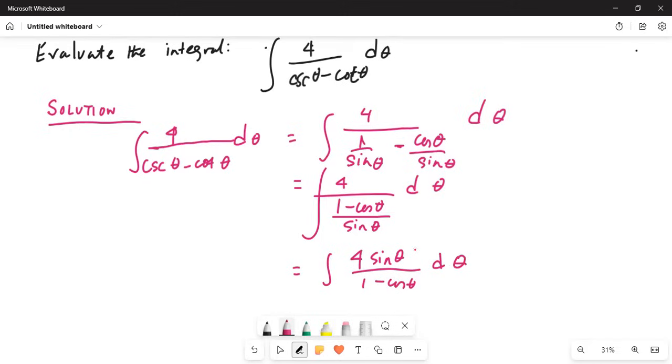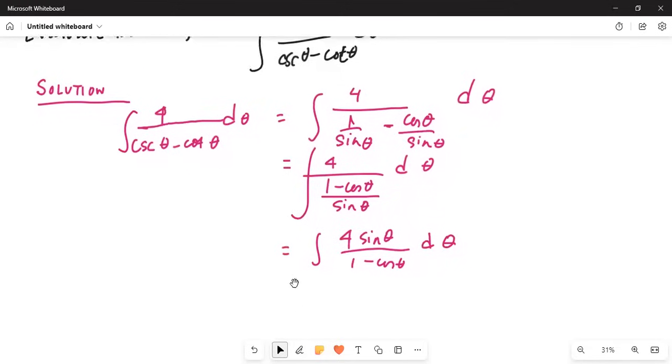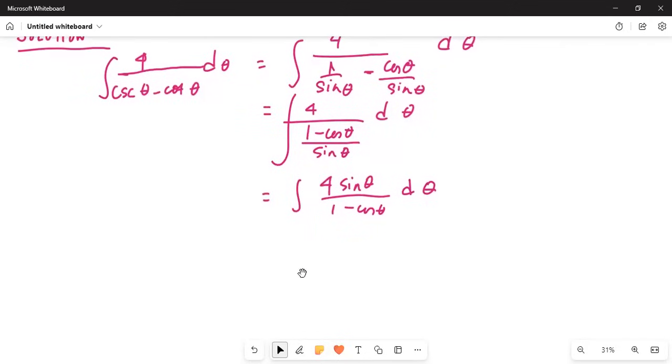Now, if I do the substitution of x equals 1 minus cosine theta, then dx equals sine theta d theta.